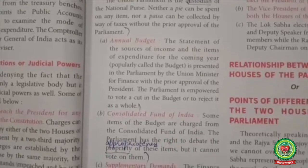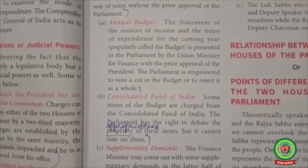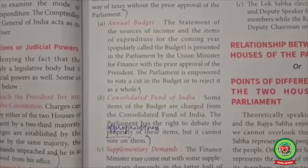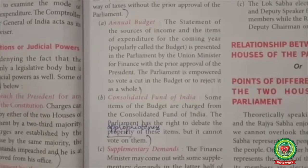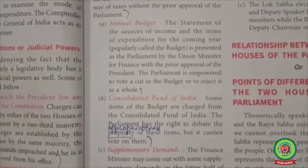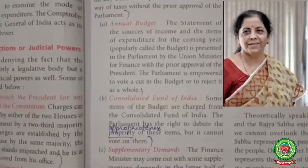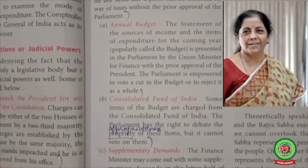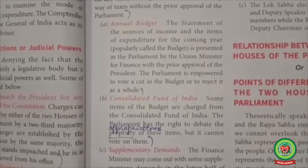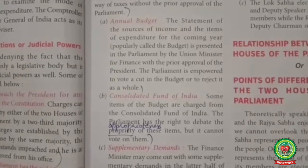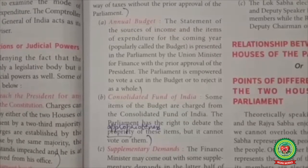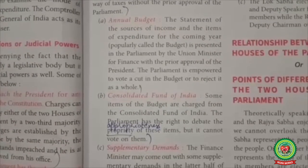A budget is defined as a plan or estimate of the amount of money needed for the cost of living or to be used for a specific purpose. This is presented by the Union Finance Minister with the prior approval of the President. At present, Nirmala Sitaraman is our Finance Minister. Once the budget is prepared, it goes to Parliament for enactment and legislation. Parliament has full power to vote a cut in the budget or to reject it as a whole.